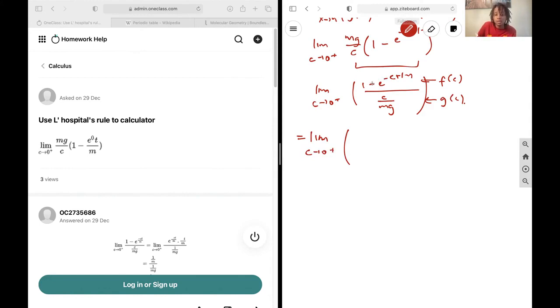It will be equal to the limit as c approaches zero from the positive side. The derivative of this is going to be negative one times negative t over m. This can be done by using u equals negative ct over m and applying the chain rule to get the derivative. Then the derivative of this is just going to be one over mg.